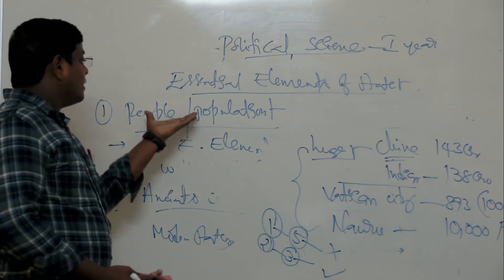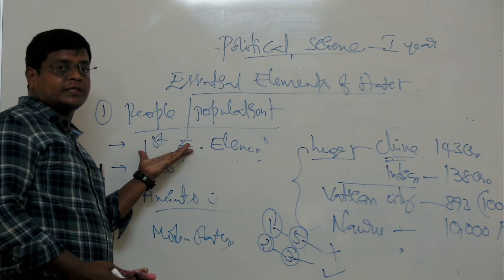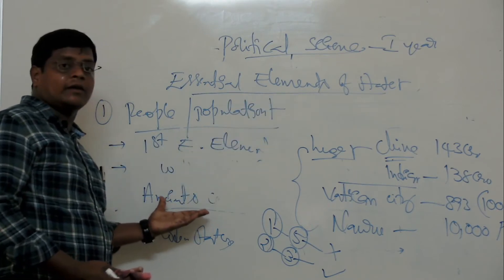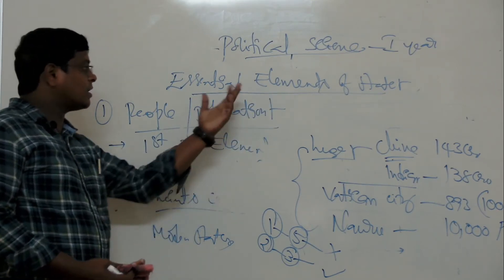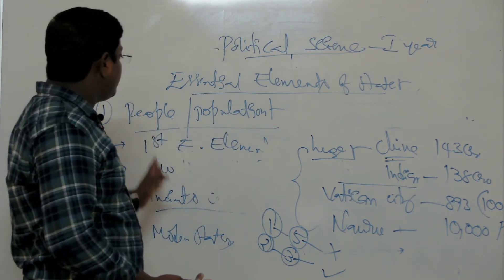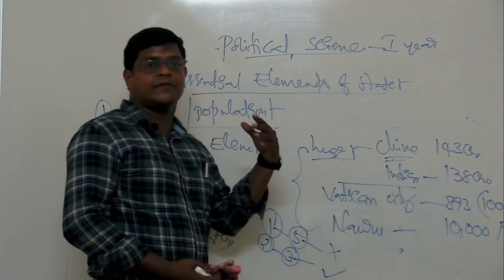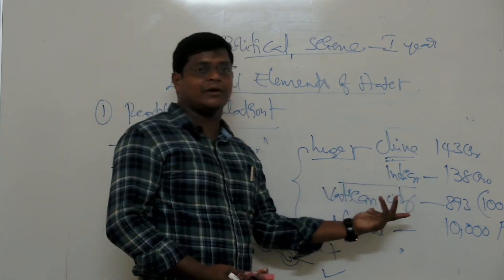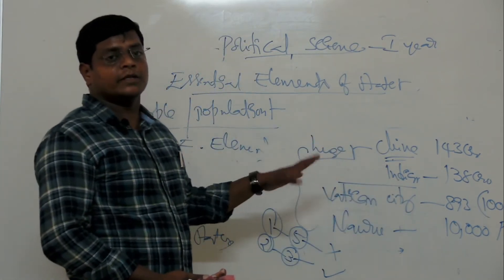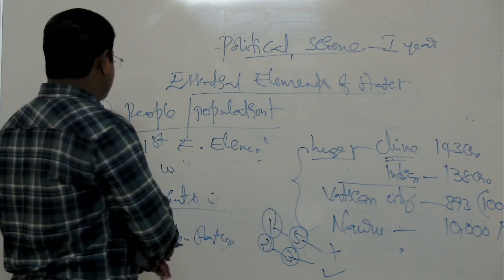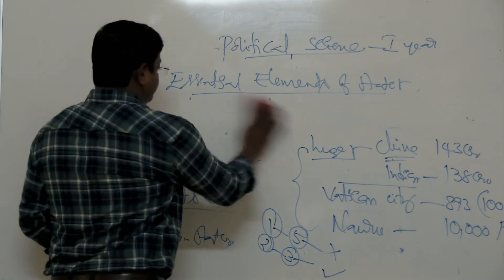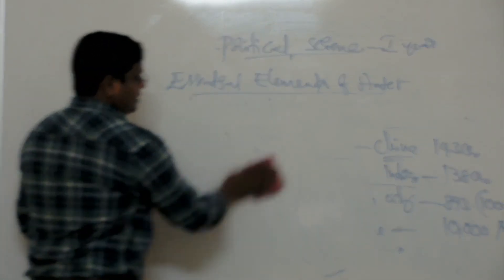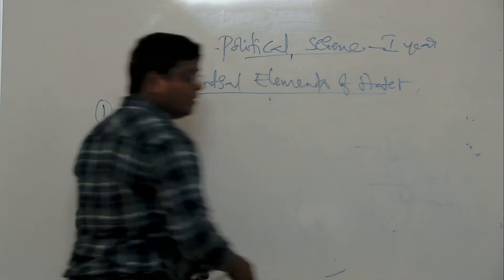To summarize: people is the first essential element of the state; without people we cannot imagine the state. No land without people is considered a state. People are of different sizes in different countries, but both are considered states. The size of the population is not important — the quality of the population is important. The second element is Territory, meaning geographical area.